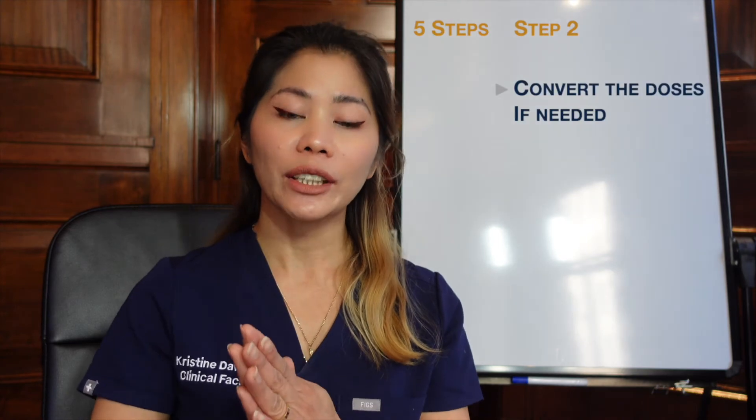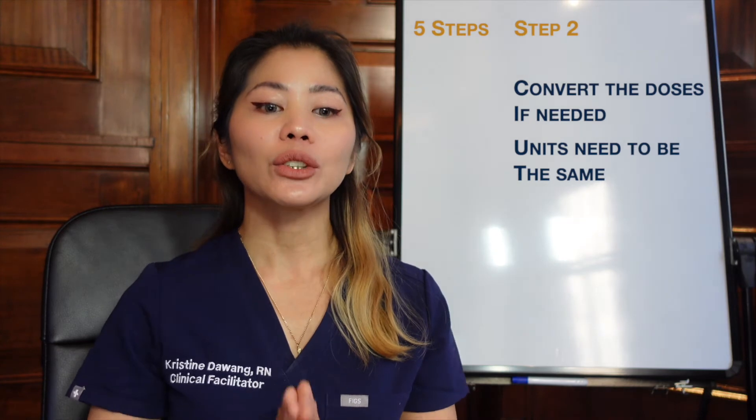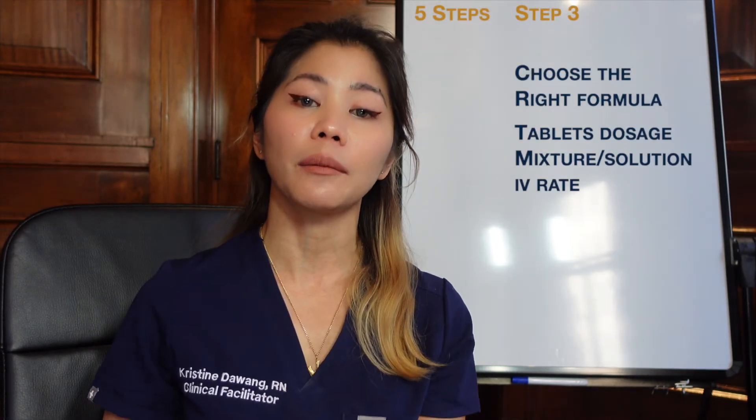Number two is convert if needed. Looking at the unit of measurement, it needs to be the same before we can calculate. For example, if the dose available is in milligrams and the one ordered by the doctor is in grams, we need to convert it first. Conversion is very important to get the right answer.